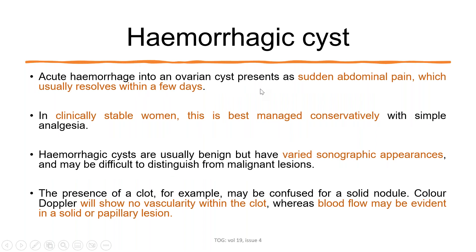Hemorrhagic cysts usually present as acute abdomen with sudden abdominal pain, which usually resolves within a few days. If the woman is clinically stable, she can be managed conservatively with simple analgesia. Hemorrhagic cysts are usually benign, but the problem is that they have various sonographic appearances based on their duration, making them difficult to distinguish from malignant lesions. A clot may be confused for a solid nodule. Color Doppler will show no vascularity within the clot, whereas flow may be present in a solid or papillary lesion — this is a key differentiating point.